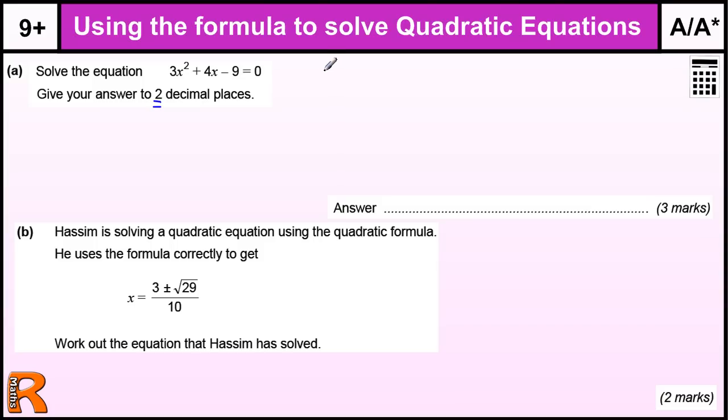If we know the form of the standard equation looks like that, then we can work out that a is 3, b is 4, and c is minus 9. Let's keep the sign with the number, c equals minus 9.